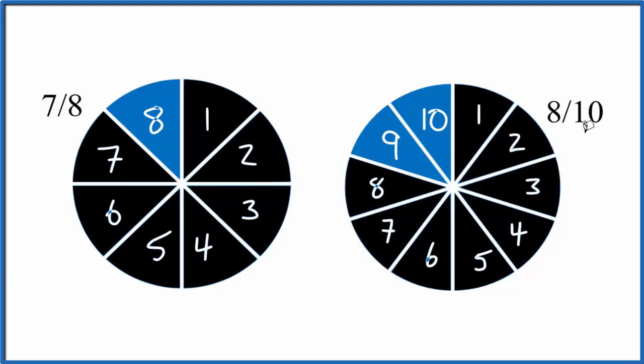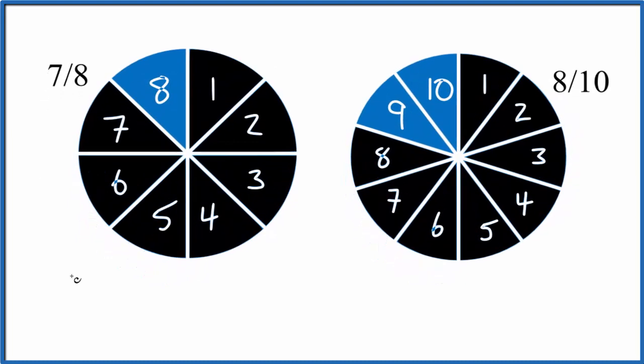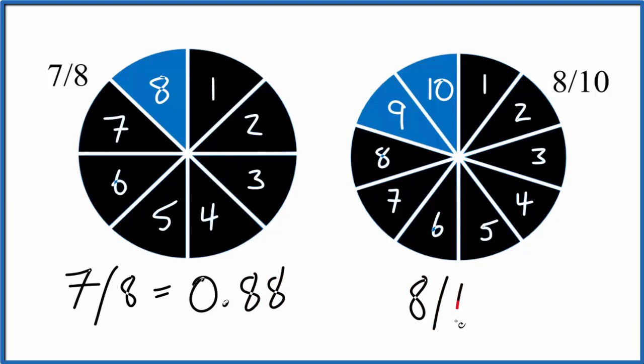We can check though. Divide 7 by 8 and then 8 by 10 to get decimals. Let's do that. So 7 divided by 8 equals 0.875, let's call it 0.88.